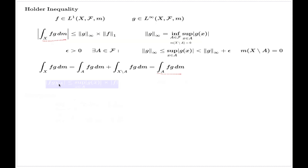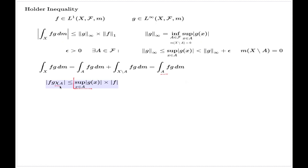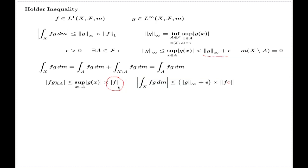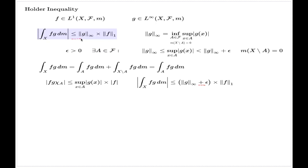Rather than estimating the original integral, I will estimate the integral over A. The function FG times the indicator of A is controlled by the supremum of G over subset A, times F — this supremum is just a number. Applying the comparison principle, the integral of the FG product is controlled by this number, which is in turn controlled by the essential supremum times the L1 norm. Since this holds for every epsilon, and nothing else in the inequality depends on epsilon, we obtain the Hölder inequality.